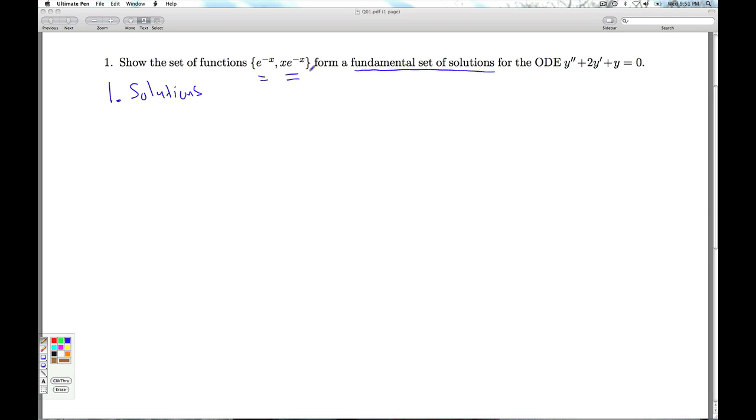In other words, we need to check that each of these functions satisfy the differential equation. Number two, they have to be linearly independent. We'll check that using our friend, the Wronskian. So we need the Wronskian to be non-zero for at least one point in the interval that we're looking at. And since no interval is specified, we'll assume it's all real numbers.